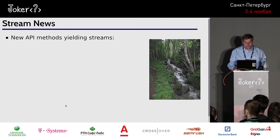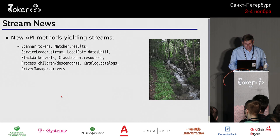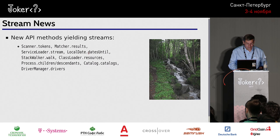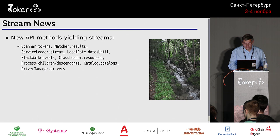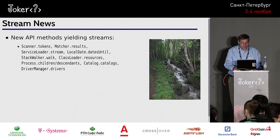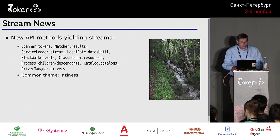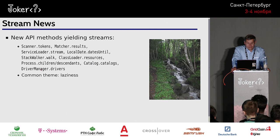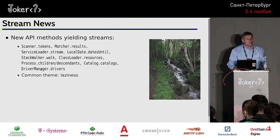How about streams? Just like optionals, you now see lots of API methods returning streams — Scanner, Matcher, service loader, LocalDate gives you a stream of dates between two local dates, StackWalker, ClassLoader. The common theme: from now on you'll always be given a stream when it's advantageous to be lazy. Whenever something is expensive to produce or unlikely to be consumed to the end, the API will give you a stream.